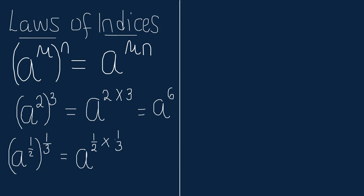Consider the rule of reciprocal. A raised to power minus 1 is equal to A raised to power minus 1 divided by 1. Reciprocate the fractional form to get 1 divided by A raised to power positive 1, which will result in 1 divided by A.